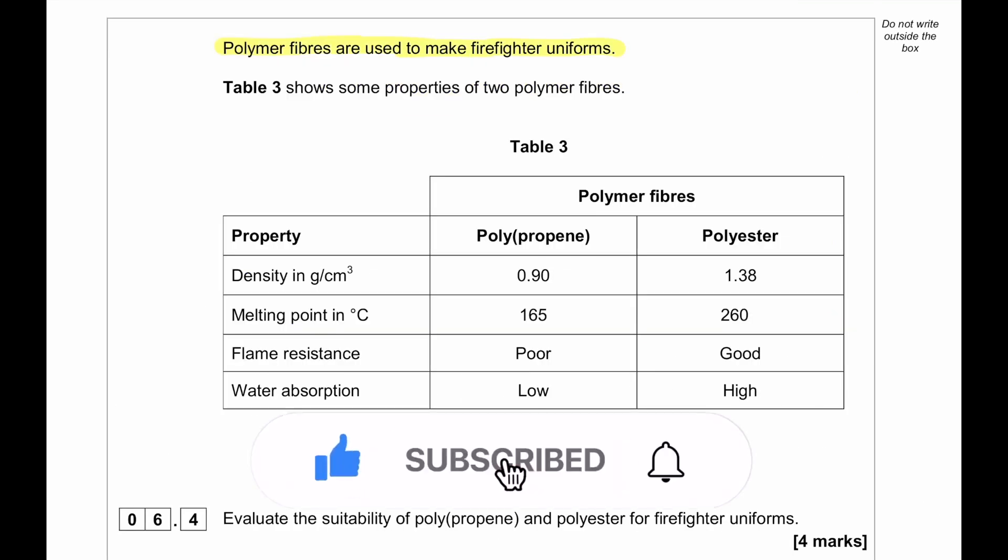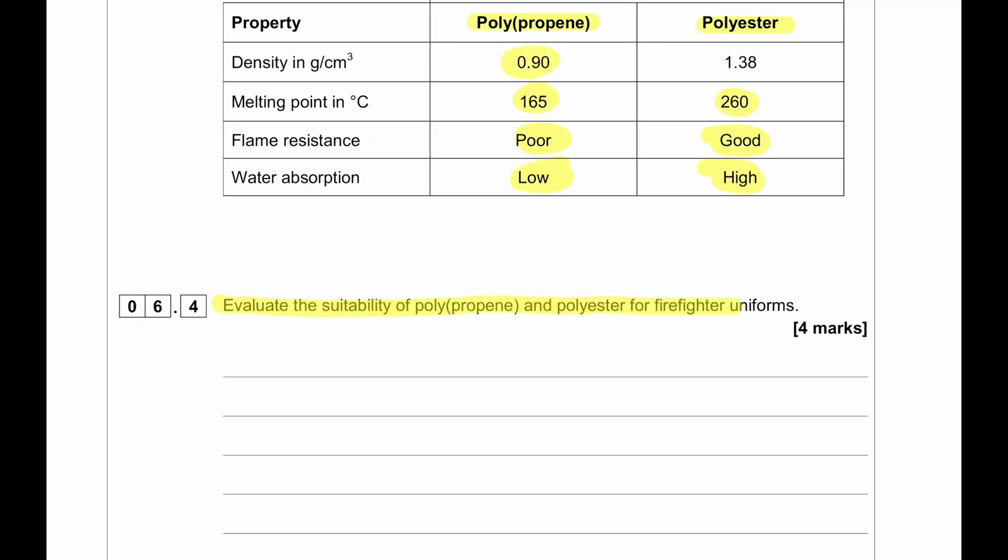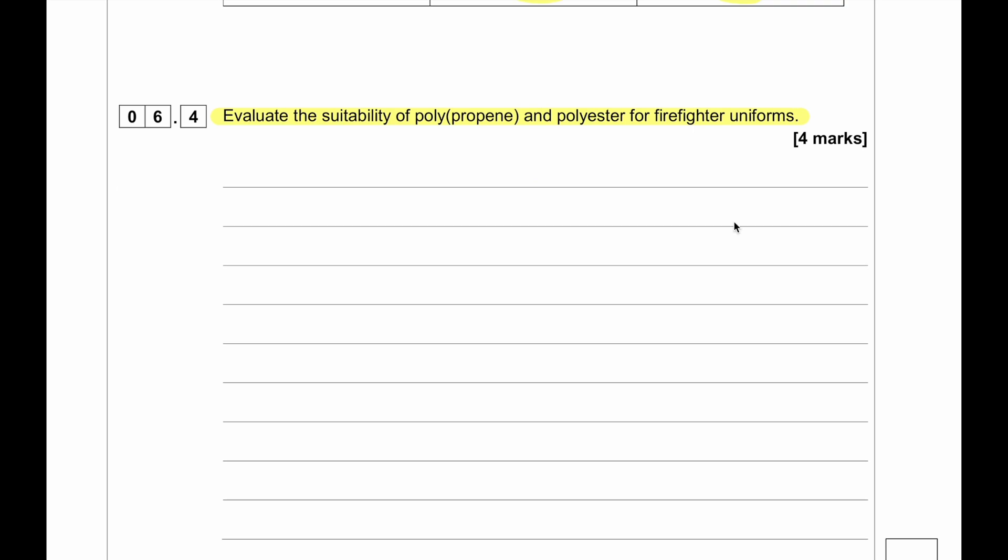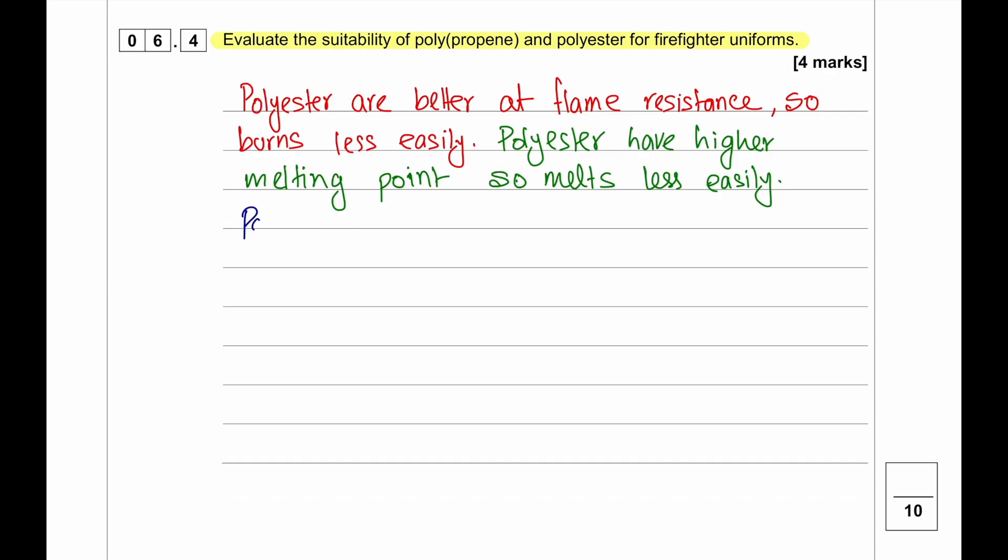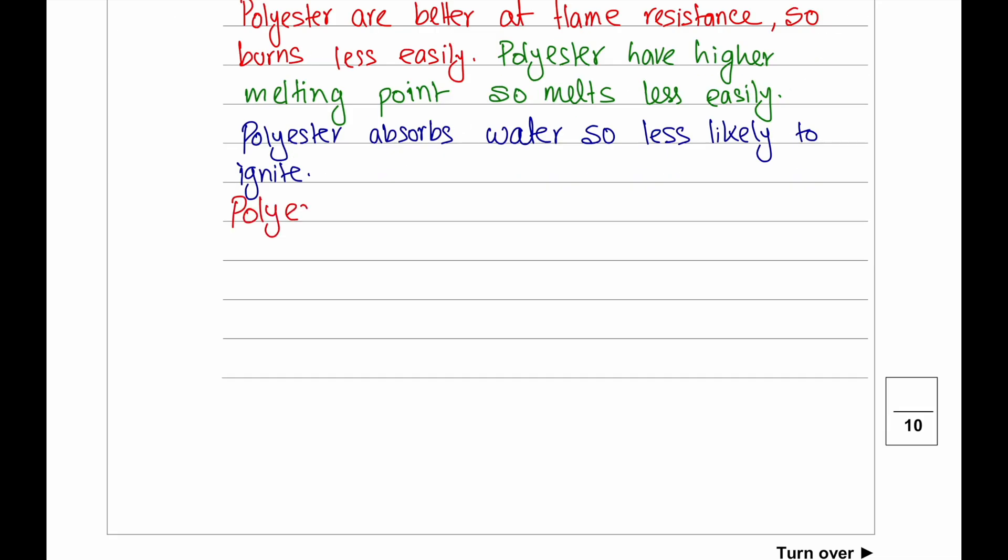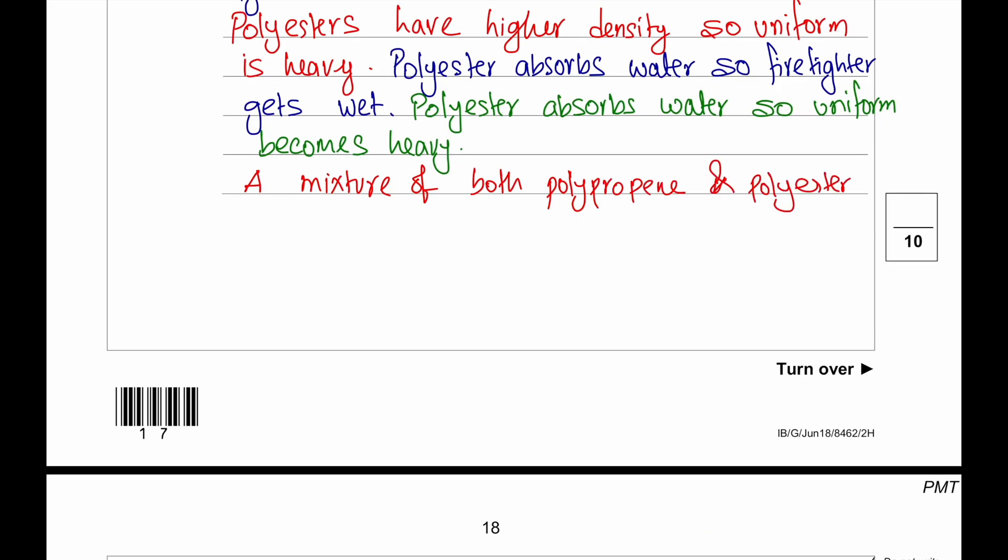Polymer fibers are used to make firefighter uniforms. Table 3 shows some properties of two polymer fibers. You can see polypropene and polyester. Their density, their melting points, their flame resistance and their water absorption is nicely mentioned here. Evaluate the suitability for polypropene and polyester for firefighters' uniform. Advantages of polyester: Polyesters are better at flame resistance so they burn less easily. Polyesters have higher melting points so they melt less easily and they have a very high water absorption meaning that they are less likely to ignite in a firefighting situation. Disadvantages of polyester: it has very high density, it's very heavy. The uniform is very heavy. Absorbs water so firefighter gets wet and absorbs water so uniform becomes even more heavy. A combination of polypropene and polyester could give a better uniform.